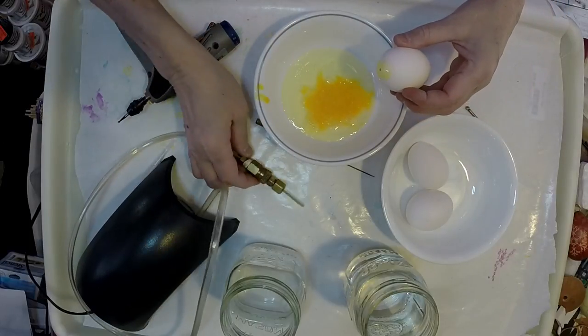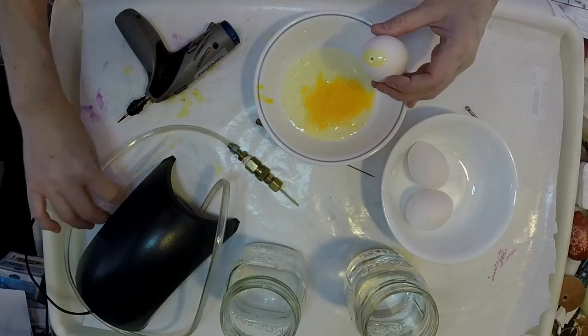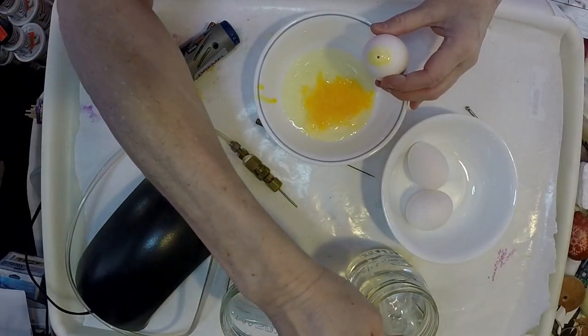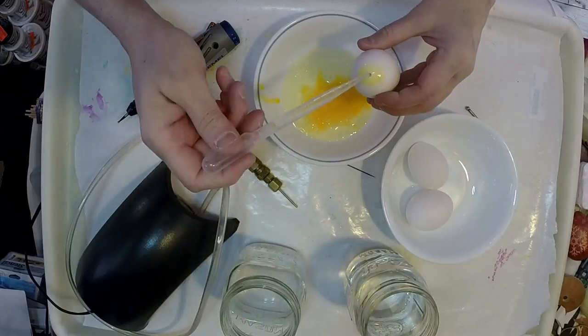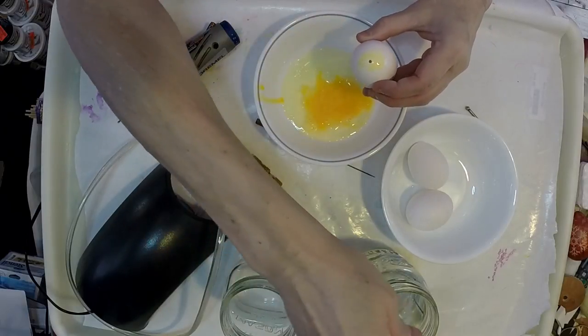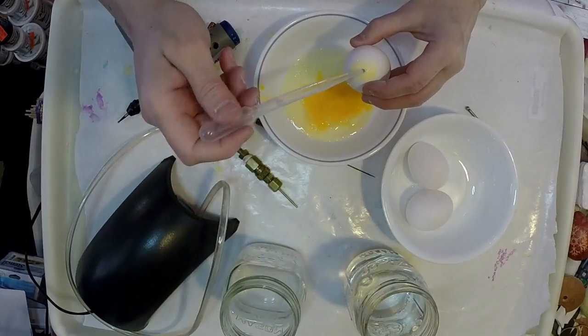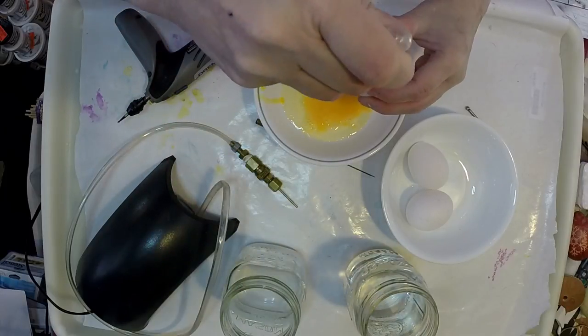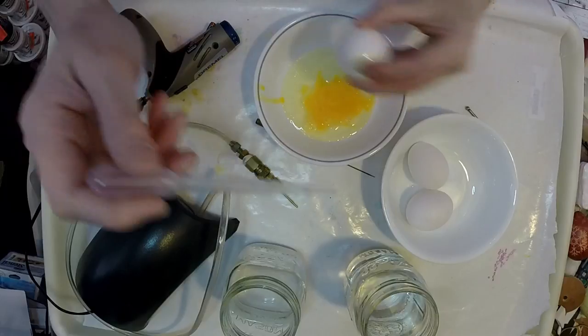So now that I've done the initial blowing out of the yolk and the whites of it, I take a pipette—or you can take a syringe, anything so you can get the bleach solution into the egg. The bleach solution is about two tablespoons of bleach to about a pint of water.